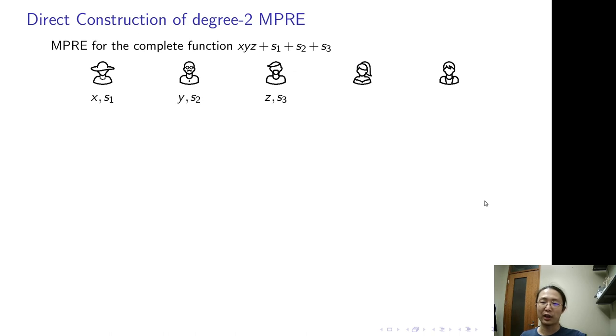So here is a complete function. Three parties hold X, Y, Z respectively. The function outputs X times Y times Z plus the negative term. As mentioned, I will first consider the honest majority setting. When I think of honest majority, the first thing that comes into my mind is Shamir's secret sharing.